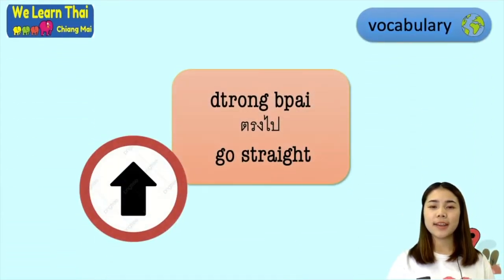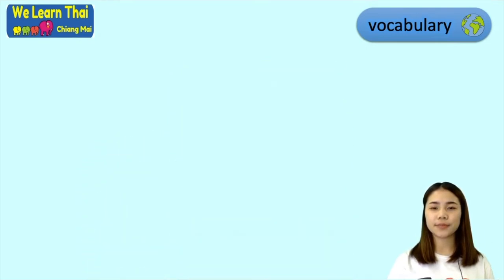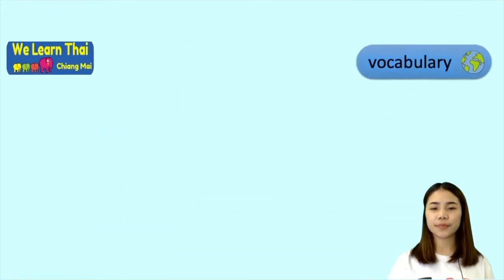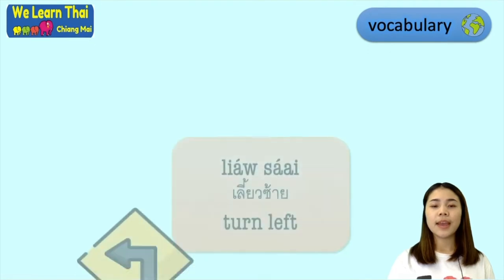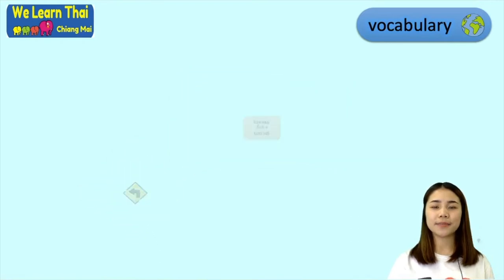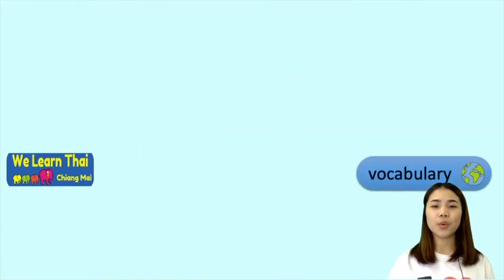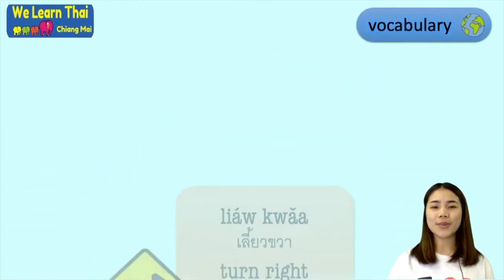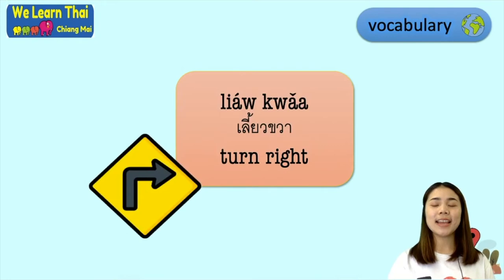The next word is 'trung pay', which means go straight. When you want to say turn left, you can say 'leiau saai'. Or when you want to say turn right, you can say 'leiau kwa'.